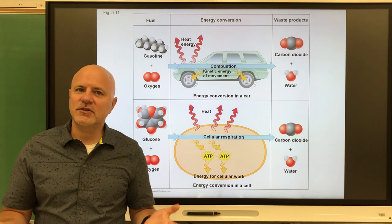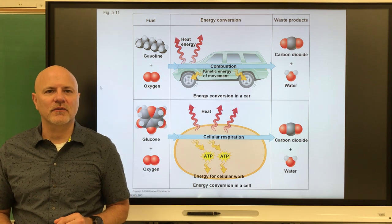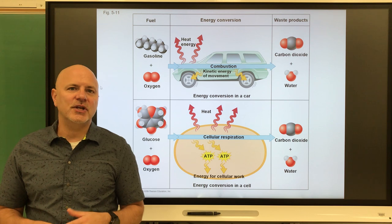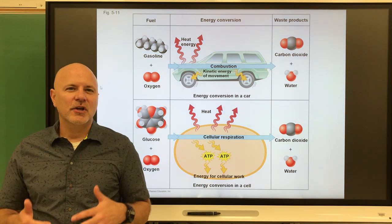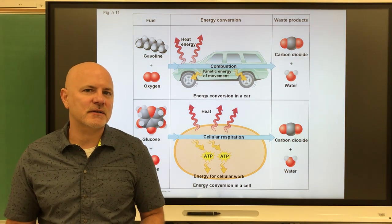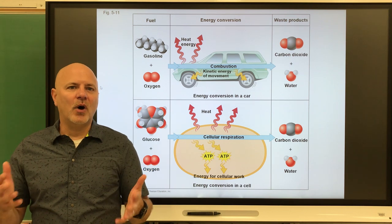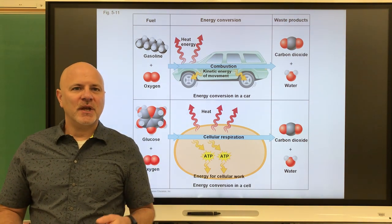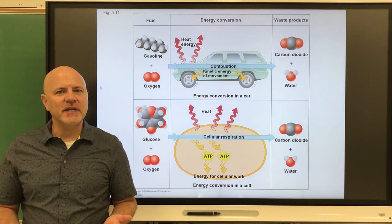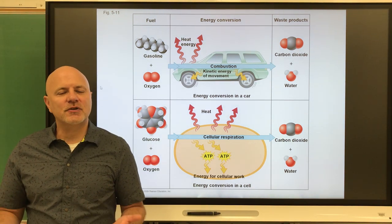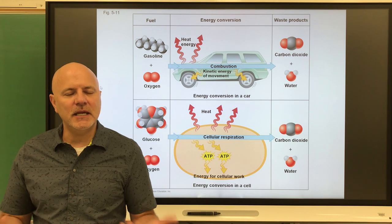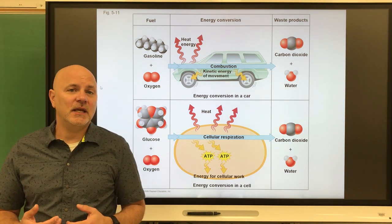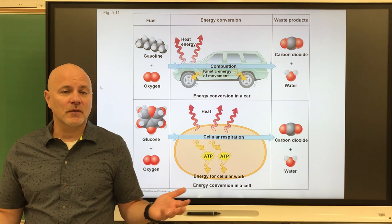This brings us to entropy — the amount of disorder in the universe. Heat is the most random form of energy, so it represents an increase in disorder. Whenever we have energy conversions going from one form to another, we always produce some heat. Entropy tells us that the entropy of the universe is always increasing, because anytime we have energy conversions, we're converting energy to heat and that is lost to the universe.